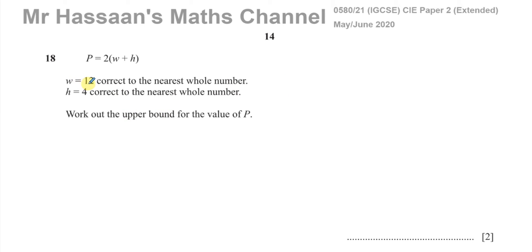It says W equals 12, correct to the nearest whole number. H equals 4, correct to the nearest whole number. And we've got this little formula: P equals 2 times brackets W plus H. Work out the upper bound for the value of P.